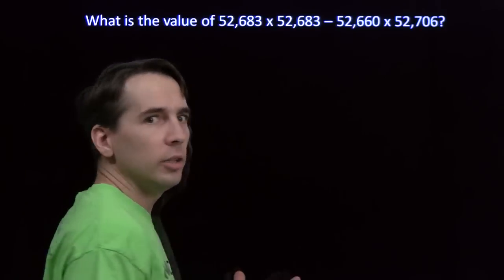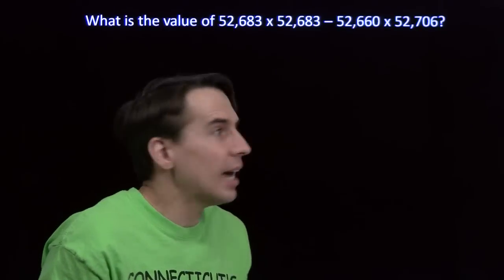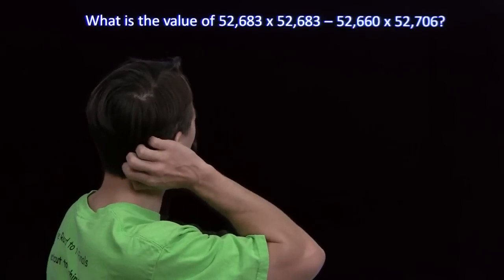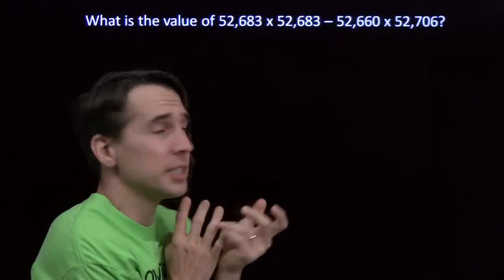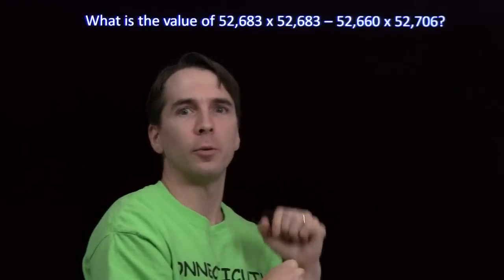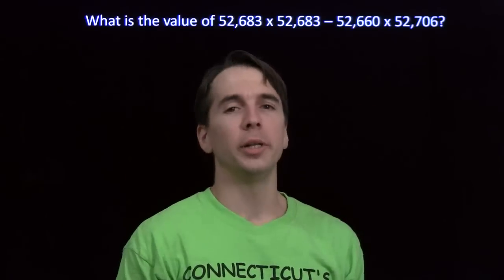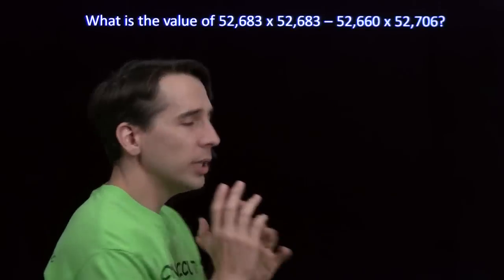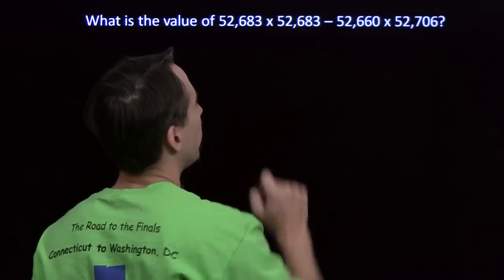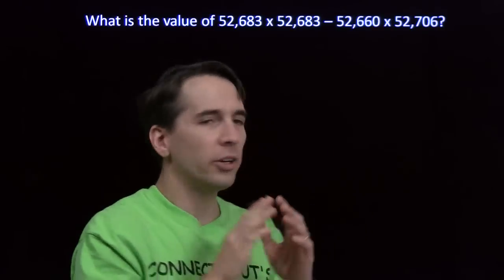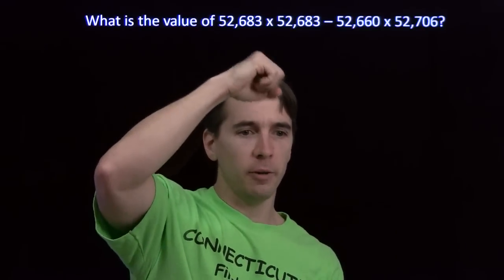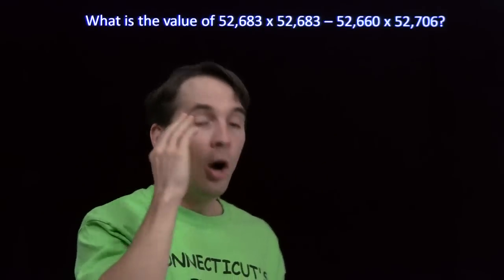On to the final problem — and I don't even have a calculator. Without a calculator, I'm going to have to be smart. When I see large scary numbers, I want them to go away, and one way to do that is to take a variable and stick it in for one of the big numbers. Now which one should I choose? These two numbers are the same, this one is 23 less than the middle, and this one is 23 more — so these numbers are equally spaced. And I once heard a really smart guy say that with three equally spaced numbers, put the variable in for the middle number. Oh yeah, that was me two problems ago.